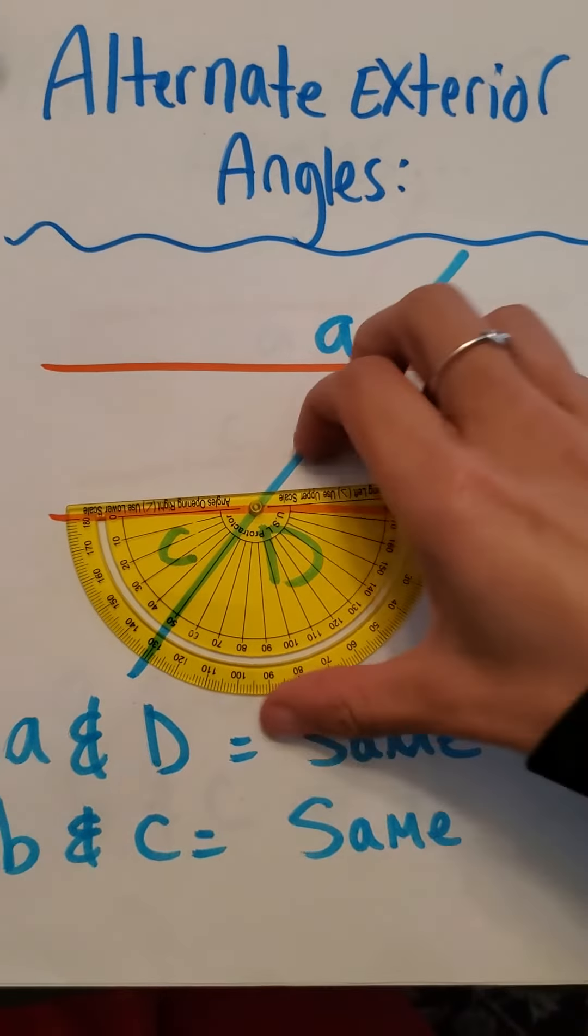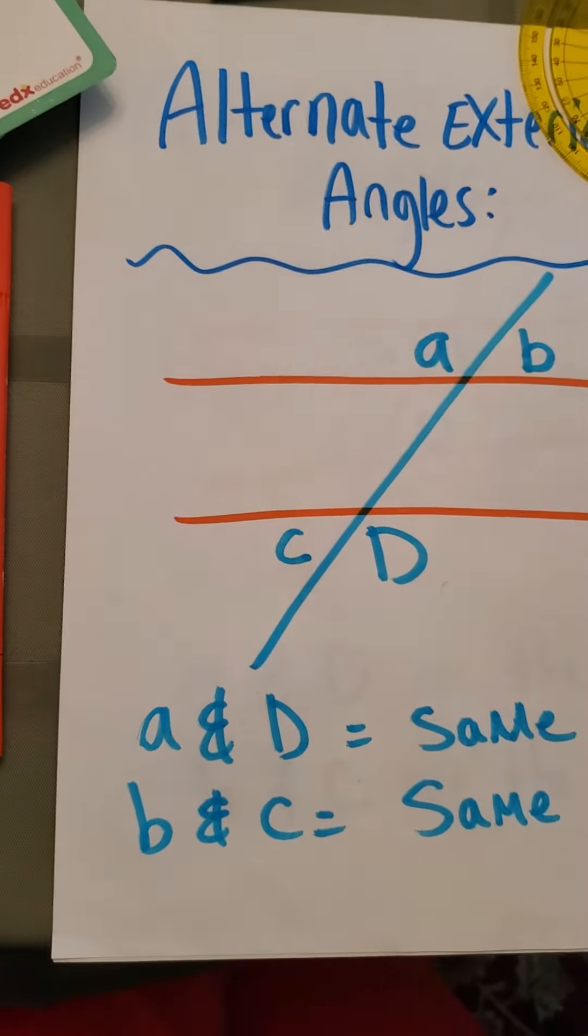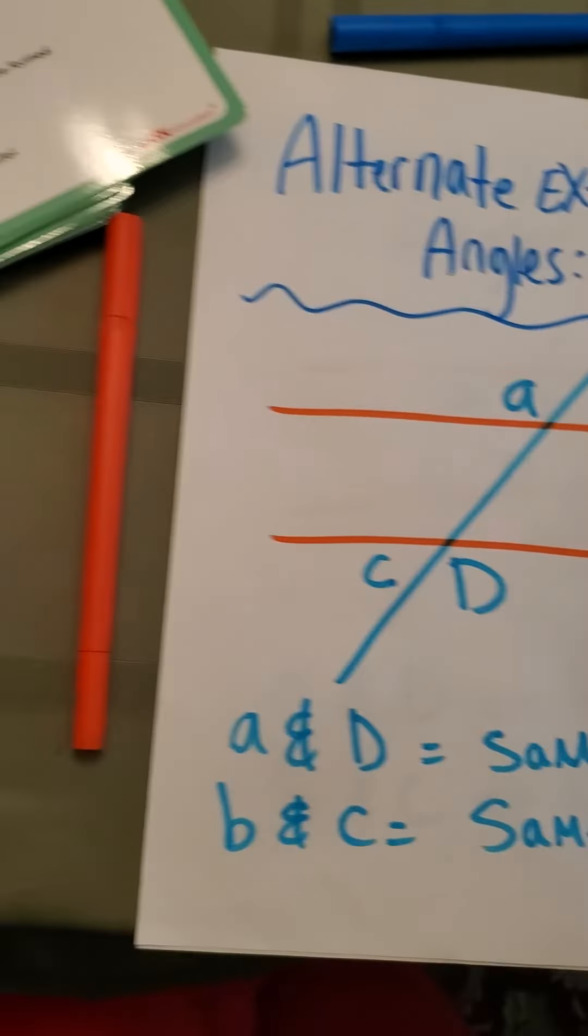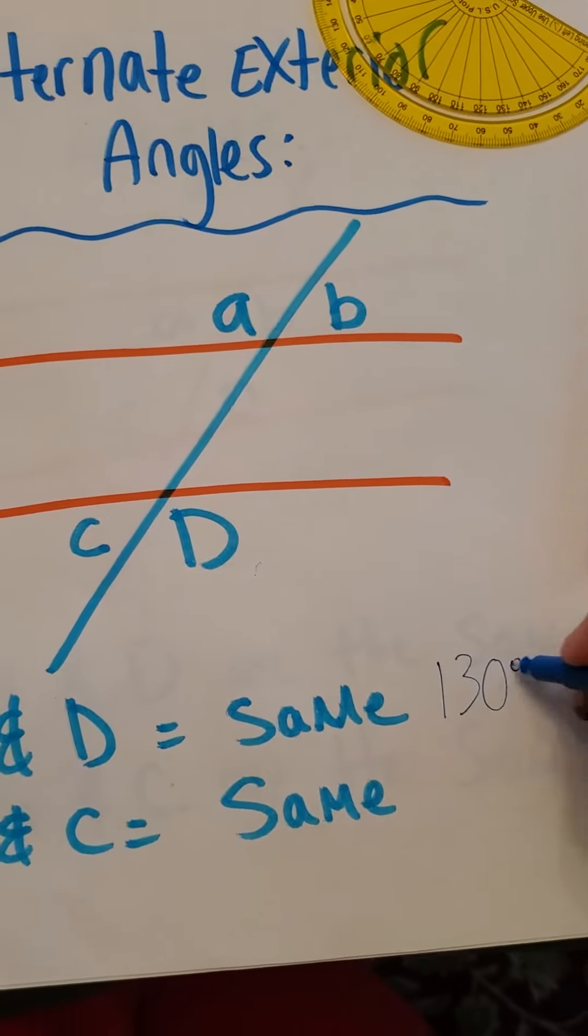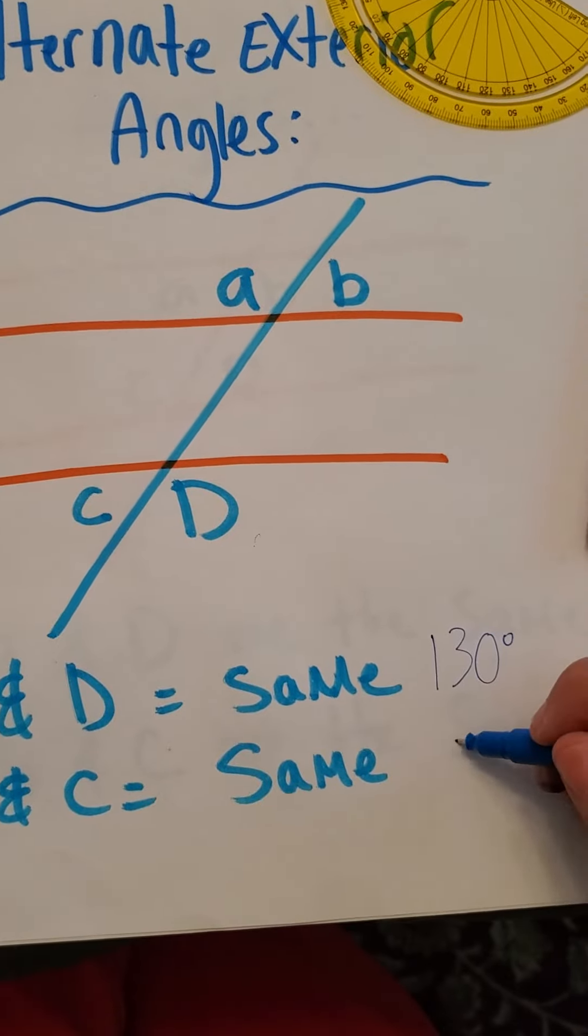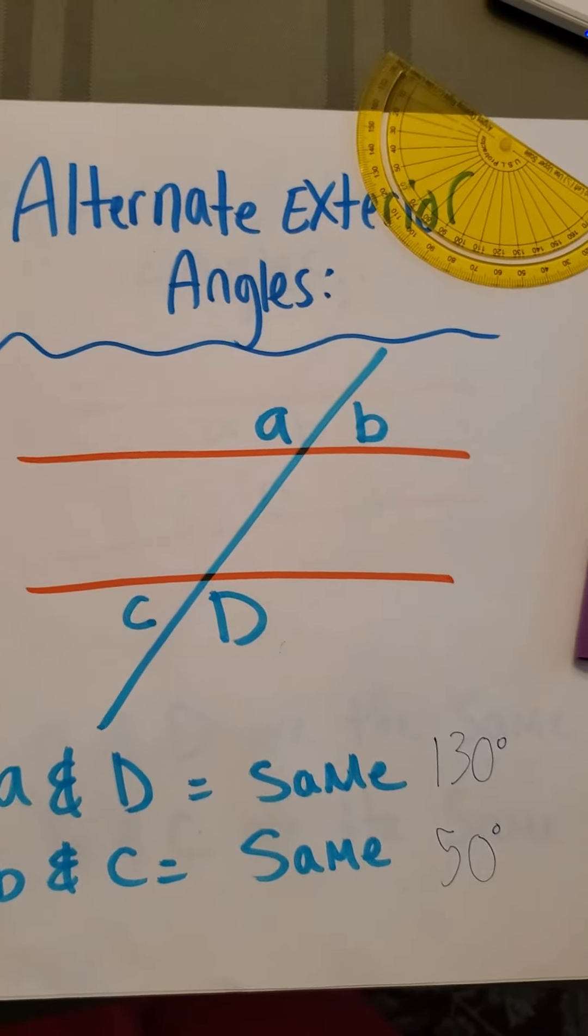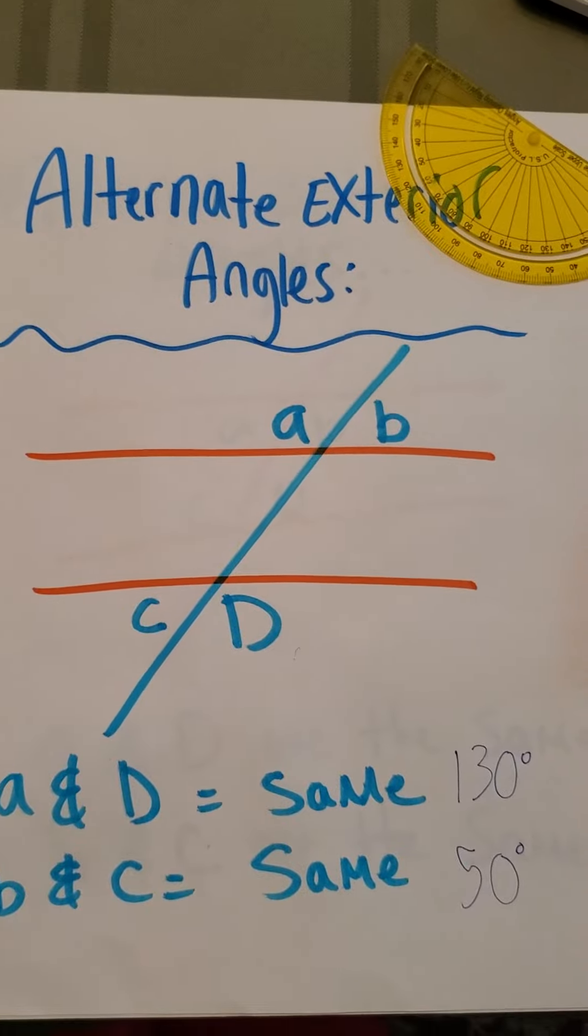They are the same. So again, A, 130 degrees. B and C are 50 degrees. And there's our alternate exterior angles.